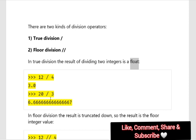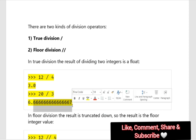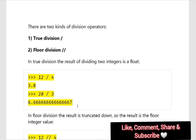20 divided by 3 will give you 6.666 and so on. You need to remember that when you are getting an actual floating point in the output, it will always give you up to 16 digits after the decimal point.